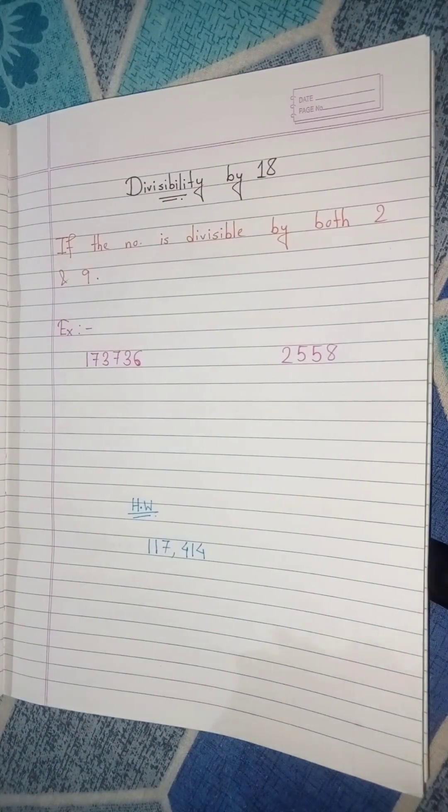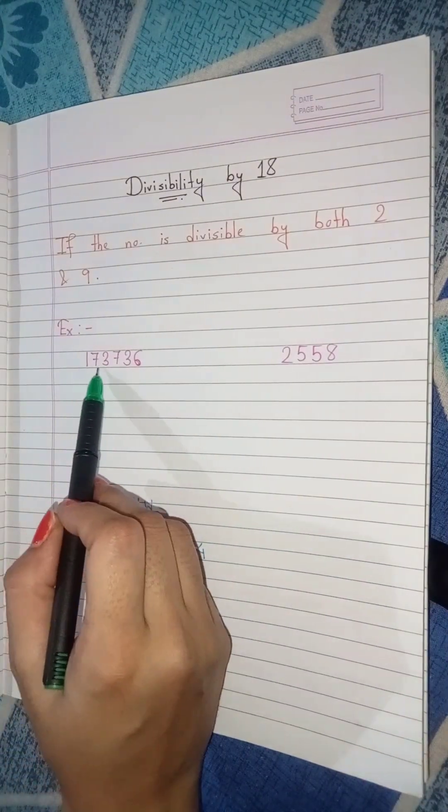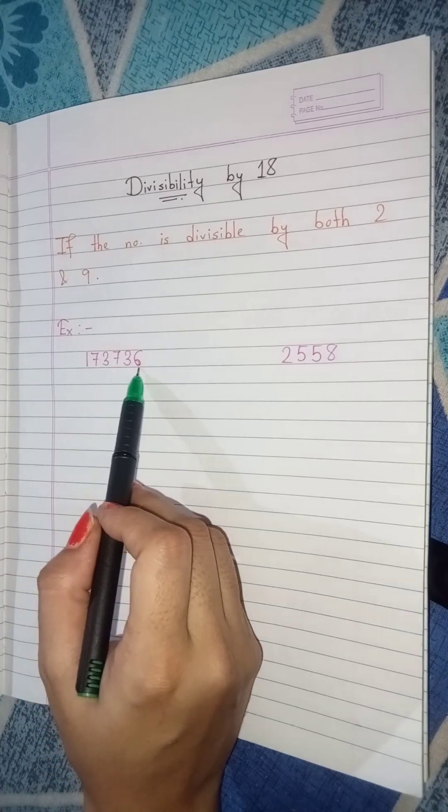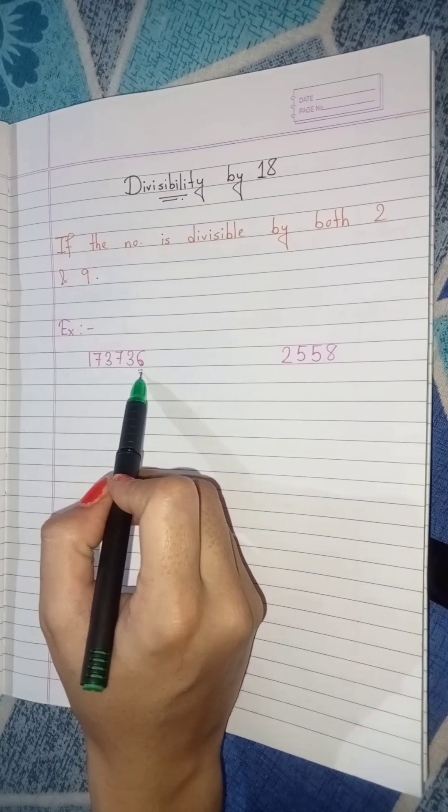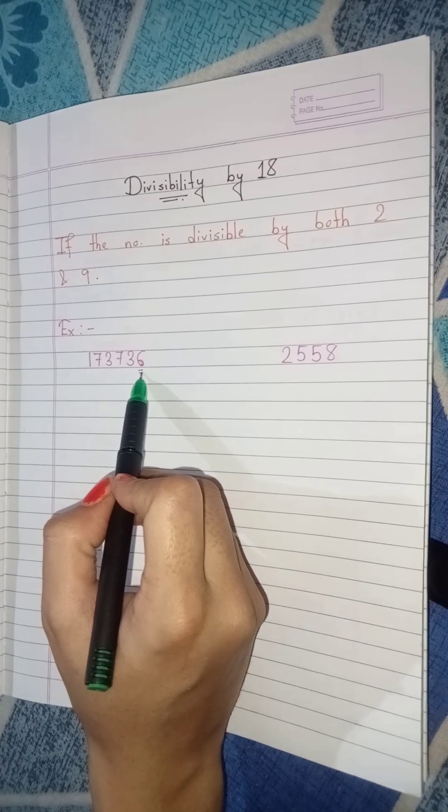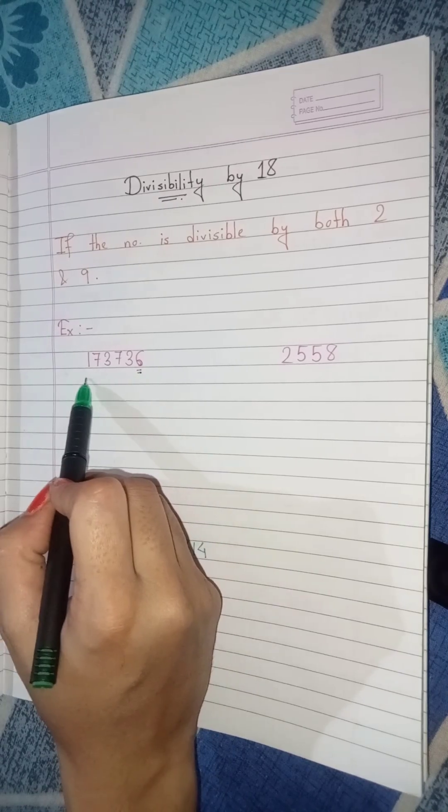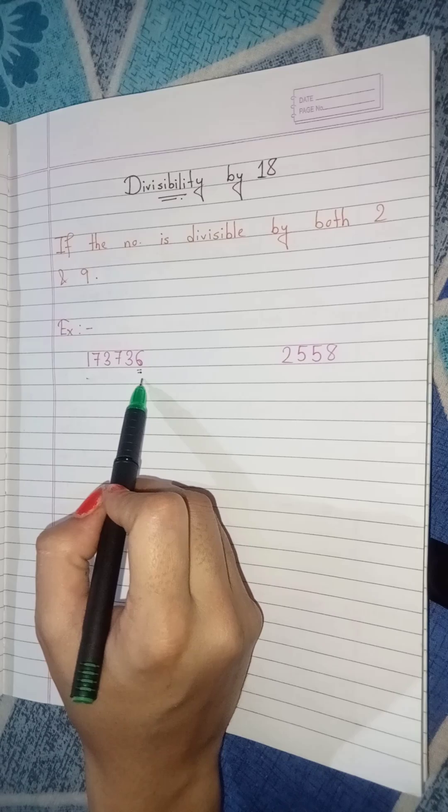Let's see some examples. 173736. Here we see that the last digit 6 which is an even number, so the number is divisible by 2.